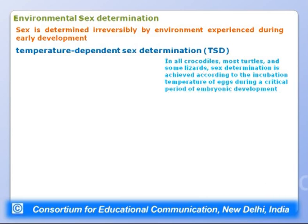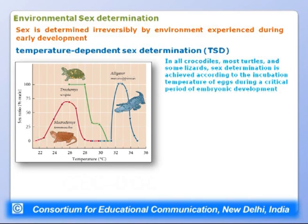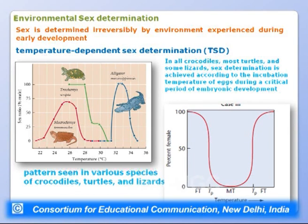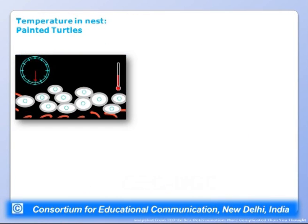In alligators, low temperatures produce all females; as temperature rises, the percentage of males increases; and at higher or lower extremes, females predominate again. In turtles, higher temperature leads to male formation while lower temperature leads to female formation. Some species of crocodiles, turtles, and lizards show a pattern where median temperature produces males while higher or lower temperatures produce females. Temperature variation during early development thus determines whether a male or female is produced.